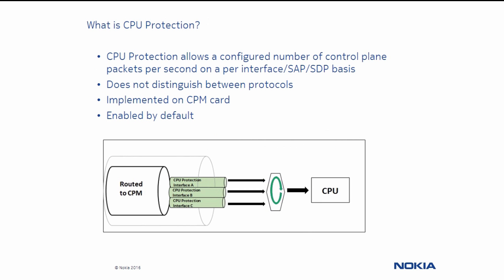So what is CPU protection? CPU protection protects the CPU from denial of service attacks by rate limiting the amount of traffic coming in from an interface, SAP, or SDP, and destined to the CPM. It does not distinguish between protocols. It is enabled by default on SAPs, SDPs, and network ports. However, the default parameters can be modified to meet the operator's requirements.